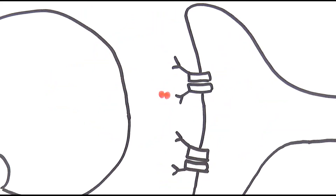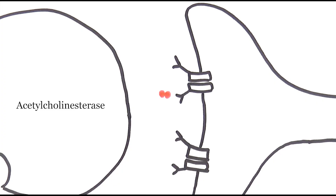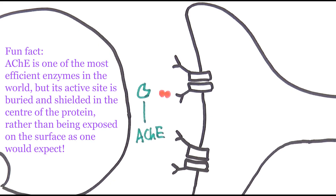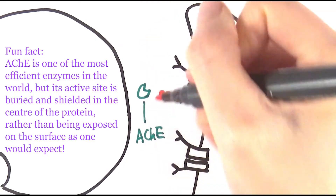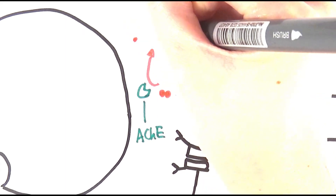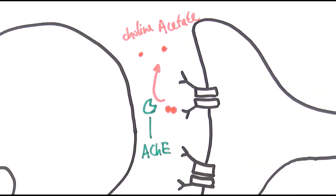The acetylcholine bound to the receptor on the post-synaptic neuron is removed by a particular enzyme called acetylcholinesterase — shorthand ACHE. Acetylcholinesterase is one of the most efficient enzymes in the world with a very quick reaction rate. It very quickly breaks acetylcholine down into its two constituents: choline and acetate, also known as ethanoic acid.